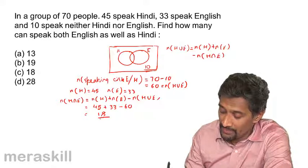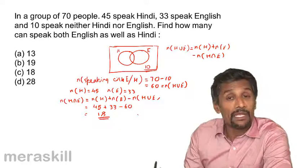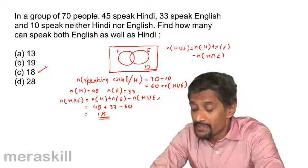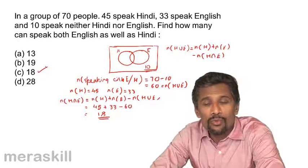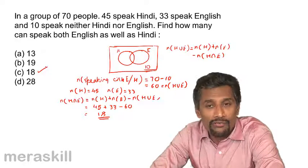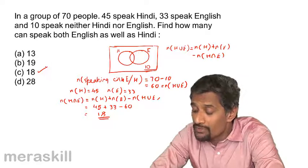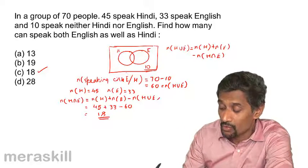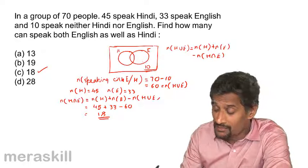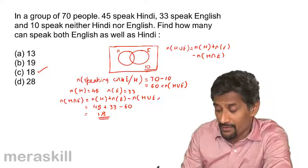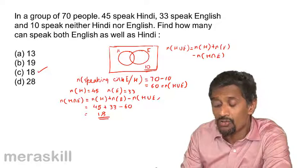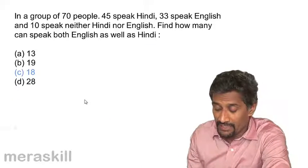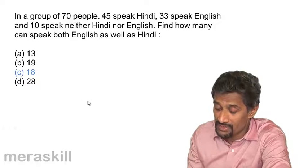In this example, unlike the previous one where everybody belonged to either category, there is a new clause: 10 of them belong neither to H nor E. So you subtract the 10 from the total number of candidates to get the number belonging to H union E. It turns out to be 18.